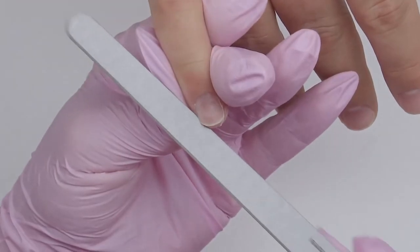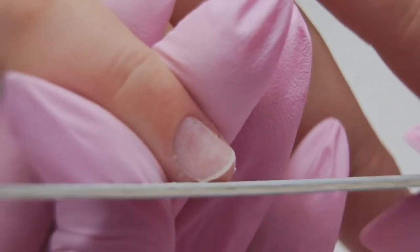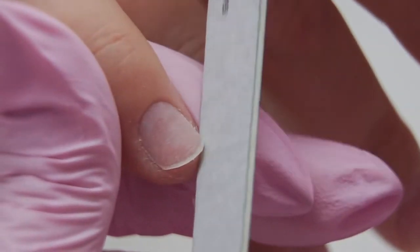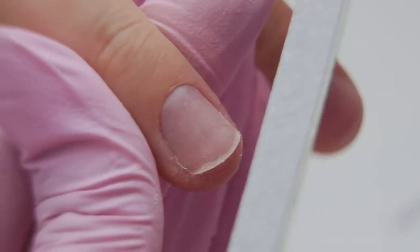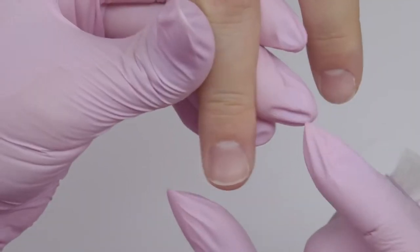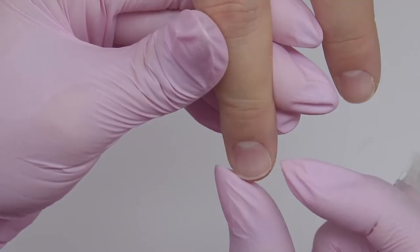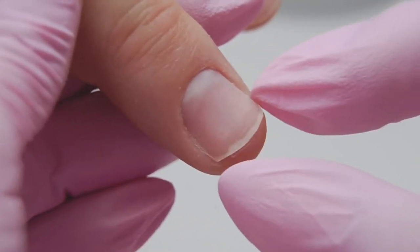Shape the free edge after the cut. Here we have a very short free edge, so let's do a squoval, since it's a universal shape that suits most nail types. My model has got wide nails, and it would be nice to extend them, but we can't do it.